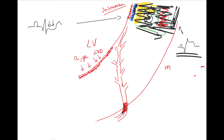But elevation is not necessarily caused only by necrosis or infarct. If someone has pericarditis, you can see it on ECG — and even in all the leads, ST elevates globally.